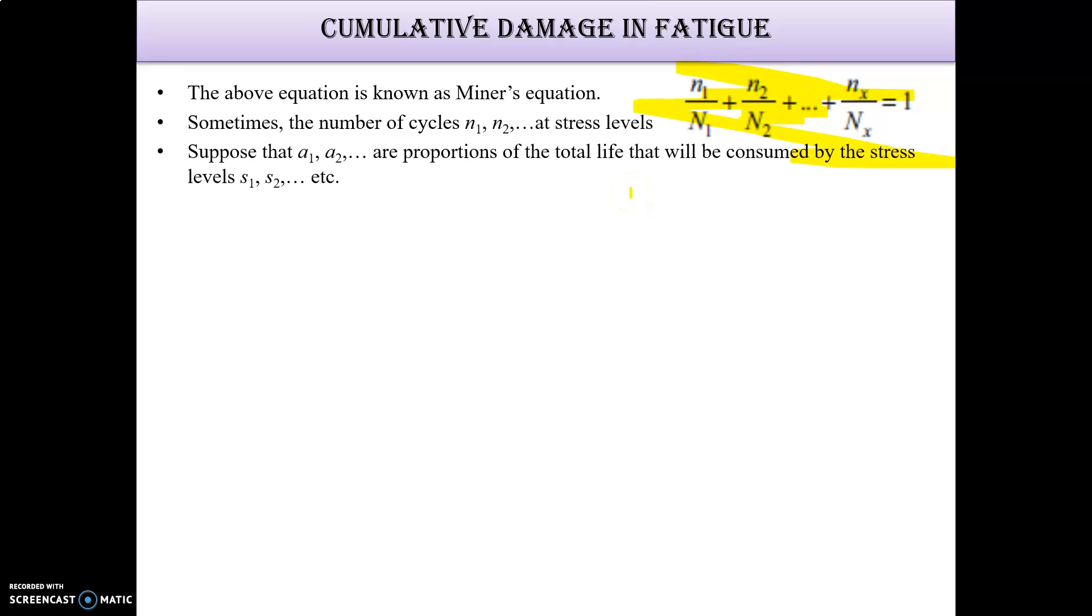N1, N2 are the number of cycles at stress level. Suppose that α1, α2 are the proportions of the total life that will be consumed by the stress levels S1 and S2. Let capital N be the total life of the component. Then N1 will be α1 times N and N2 equals α2 times N. Now substituting these values in Miner's equation...